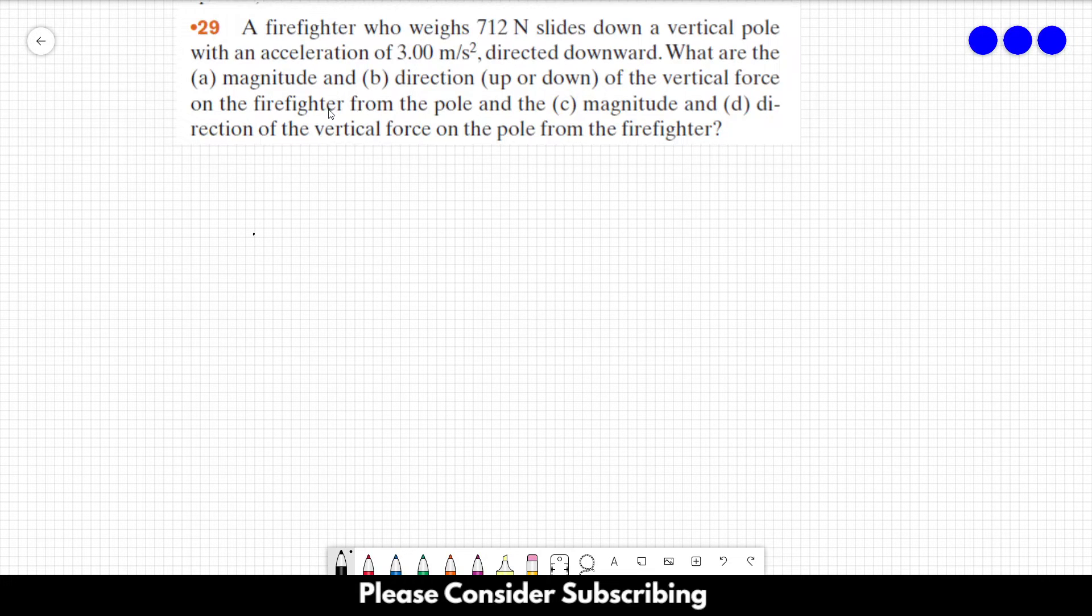Number 29. A firefighter who weighs 712 newtons slides down a vertical pole with an acceleration of 3 meters per second squared, directed downward. What are the magnitude and direction of the vertical force on the firefighter from the pole and the magnitude and direction of the vertical force on the pole from the firefighter?